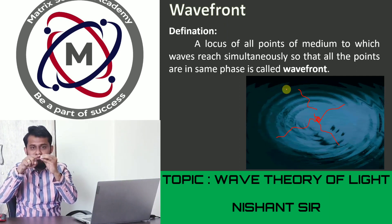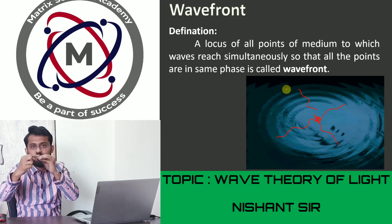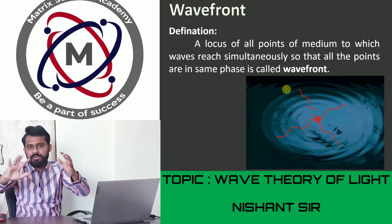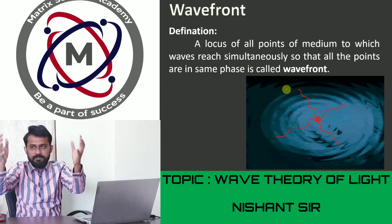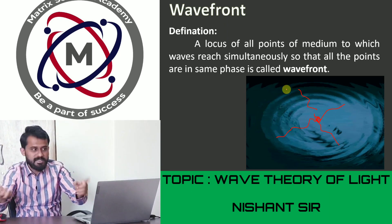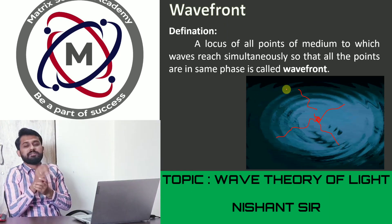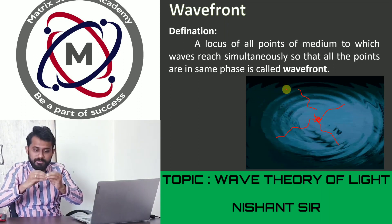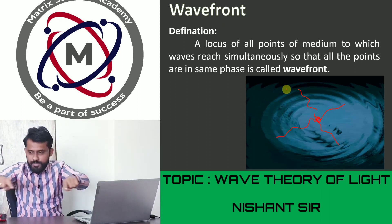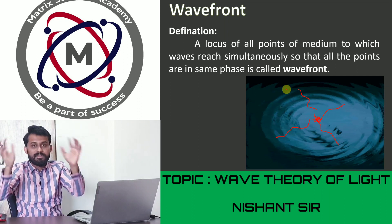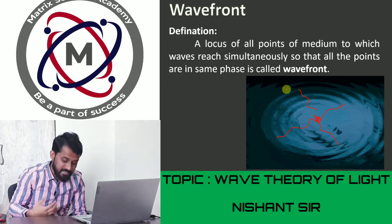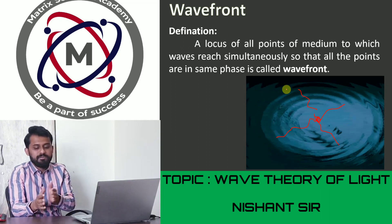In 3D, if a bulb is switched on, light travels in all directions - up, down, left, right, towards and away from you. After some time, all those waves reach a spherical surface. The surface of that sphere is called a wavefront. A wavefront is an imaginary concept - you cannot physically touch it. It is simply the surface where all points of the medium are in the same phase.